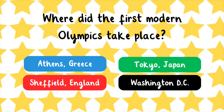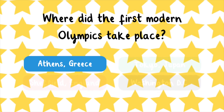Where did the first modern Olympics take place? Athens, Greece, Sheffield, England, Tokyo, Japan, or Washington, D.C.? The first modern Olympics took place in Athens, Greece, to honor the ancient games.